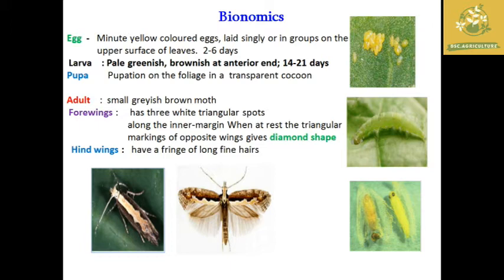The egg is yellow colored and is laid on the upper surface of the leaves. The egg period is two to six days. The larva is a pale green color, brownish at the anterior end, and the larval period is 14 to 21 days depending on climatic conditions.